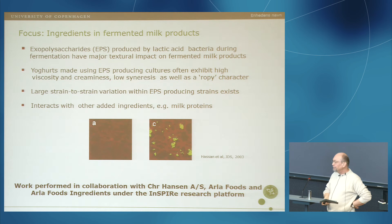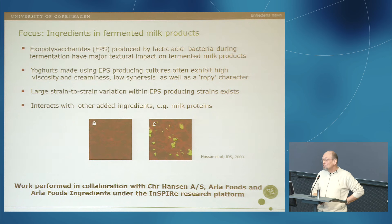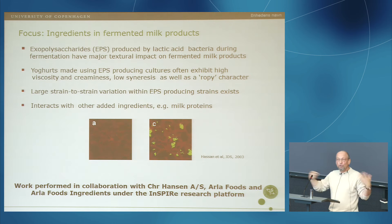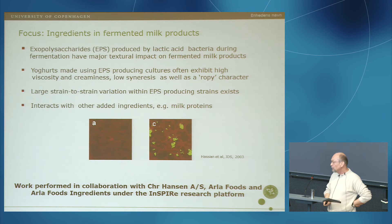Another focus for quite some time has been ingredients in fermented milk products. Exopolysaccharides is one aspect, and they differ quite a lot. Exopolysaccharides are produced by lactic acid bacteria during fermentation - it's like an in-situ production of stabilizers within the yogurt; instead of adding something, you have the bacteria doing it for you. Bacteria differ a lot, and there are lots of strain-to-strain variations within EPS-producing cultures. They interact with other ingredients we've added into a yogurt system, such as milk proteins added to improve texture and consistency.